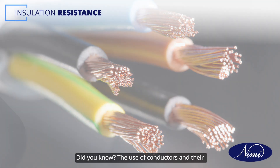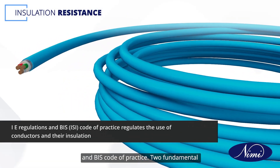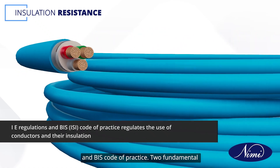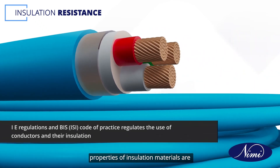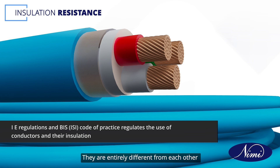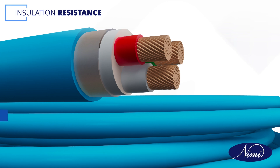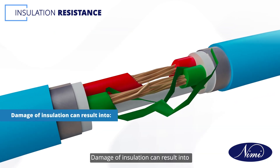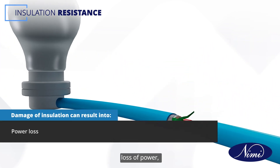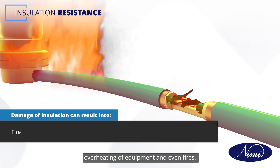The use of conductors and their insulation is regulated by IE Regulations and BIS Code of Practice. Two fundamental properties of insulation materials are insulation resistance and dielectric strength. They are entirely different from each other and measured in different ways. Damage of insulation can result in loss of power, overheating of equipment, and even fires.